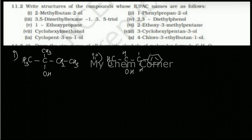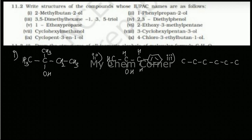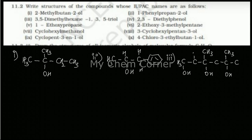The third one is 3,5-dimethylhexane-1,3,5-triol. The parent hydrocarbon is hexane-1,3,5-triol, so draw a six-carbon chain: 1, 2, 3, 4, 5, 6. It says 1,3,5-triol meaning three alcohol OH substituents at carbons 1, 3, and 5. Then 3,5-dimethyl means a methyl group at position 3 and another at position 5. Fill in the hydrogen atoms for each carbon to complete the molecule.